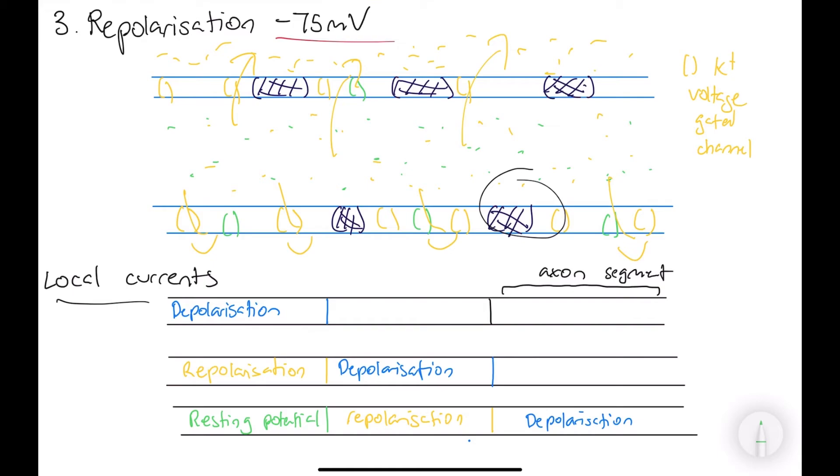And this process is able to occur because there's diffusion happening with the sodium ions. Because as you can recall, in depolarization, we have a lot of sodium ions inside this segment of the axon. So, because they go from high to low concentration, then some of the sodium ions will start to slowly diffuse into the next one. So, it becomes slightly depolarized, and eventually, it does become depolarized.